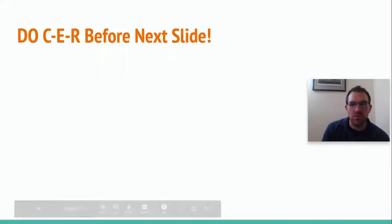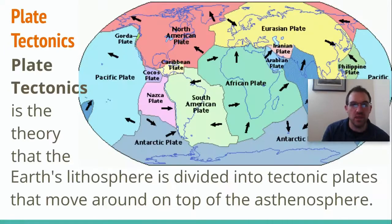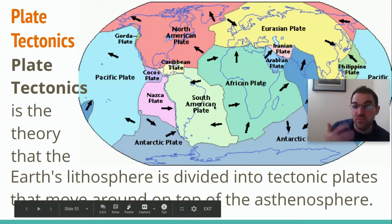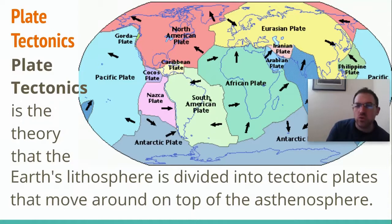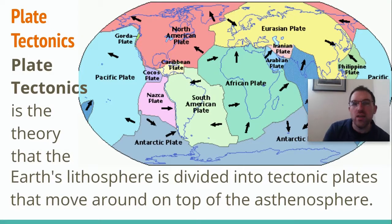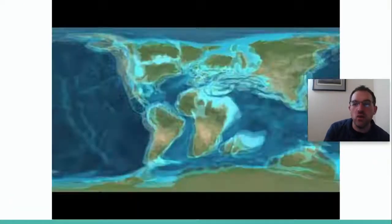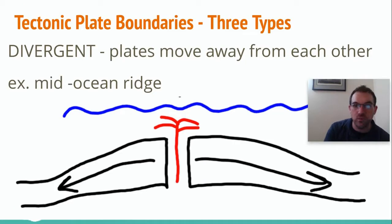We've long discussed how the theory of plate tectonics describes how the lithosphere is broken up into different tectonic plates. These arrows represent the directions in which they're moving. Sometimes the plates are moving away from each other, sometimes into each other, and sometimes side by side, past one another. All these different boundaries make up the tectonic plate boundaries.